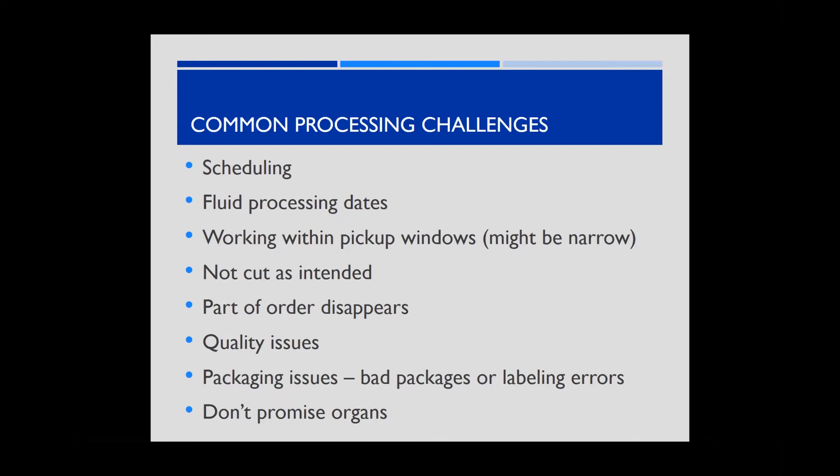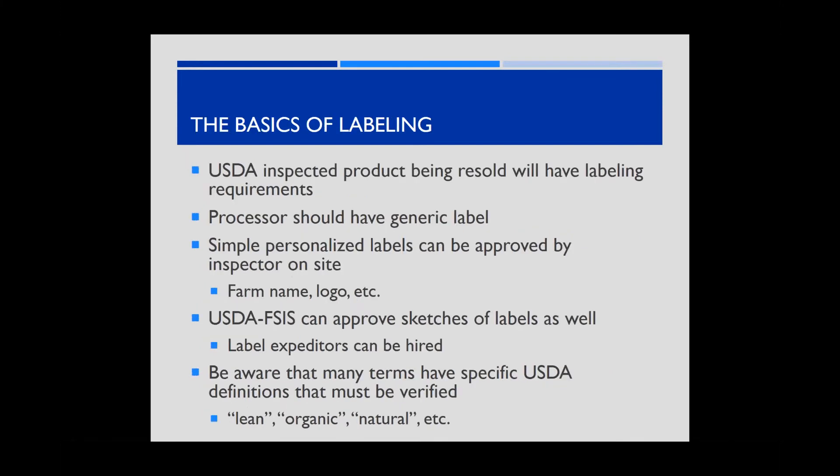Don't promise organs to customers. About one in three livers requested are actually received — inspectors are very strict on livers. Heart, kidney, and tongue are also hit or miss. Kenny transitions to talking about labeling, noting two instructive stories from early in his career.